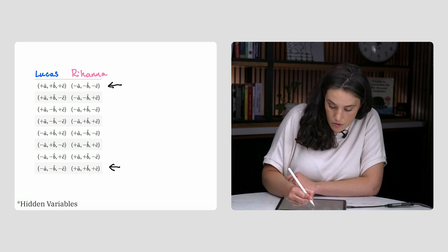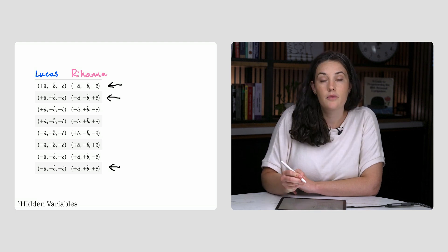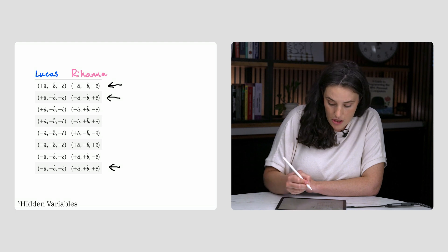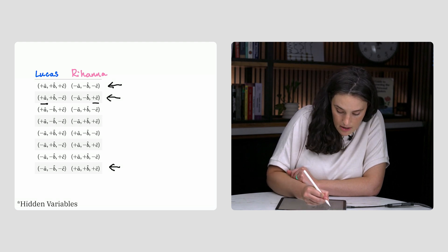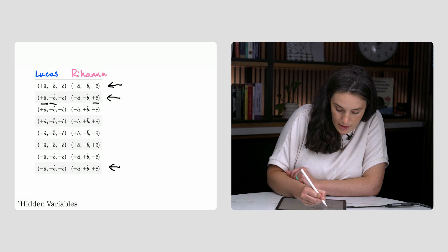But what about the instructions in row 2? They would measure the same signs if Rihanna measured along C, and Lucas measured along either A or B,